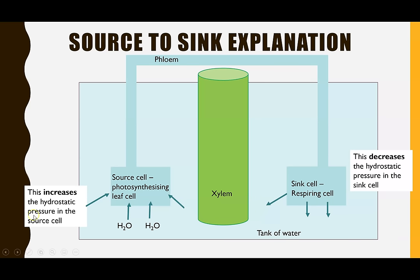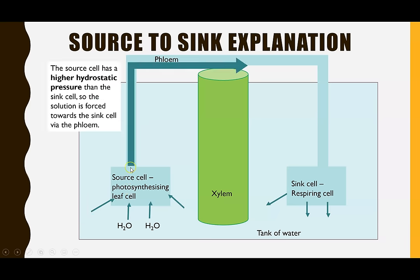This has an impact on the pressure of the two cells. The source cell has an increased hydrostatic pressure because more liquid is moving in, whereas the sink cell has a decreased hydrostatic pressure because water is moving out. Because the source cell has comparatively higher pressure, it forces the sugary solution up and out of the phloem towards the sink cell, moving the sugary solution en mass to the respiring cells that require that sugar.